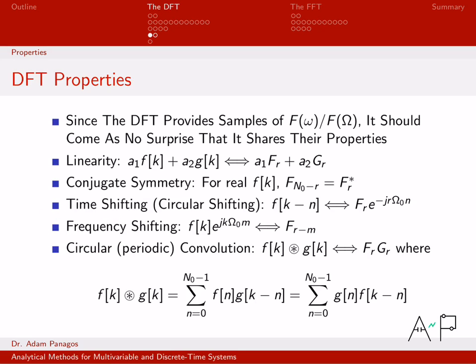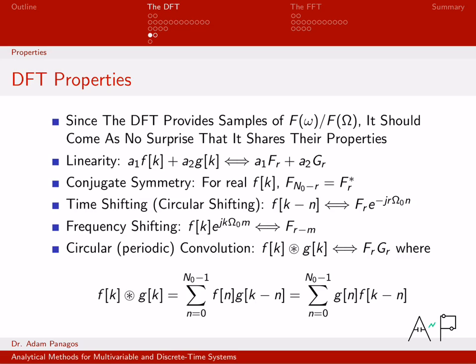We see that again here on the frequency shifting property: if I shift in one domain, I get this exponential in the other domain. There are also nice properties with convolution. We know that linear convolution in time is multiplication in frequency. Something very similar happens with the DFT: convolution in time is multiplication of the signal's coefficients in frequency. The subtle difference is this symbol — instead of just the star convolution operator, there's a circle around it. We use that symbol to represent circular convolution. Circular convolution assumes that the underlying signals you're working with are periodic signals. If you're dealing with periodic signals, you only need to evaluate this convolution on one interval, and then that pattern repeats periodically.